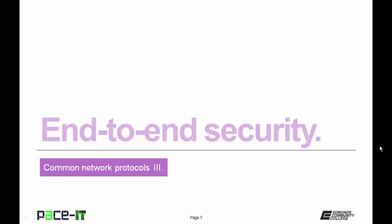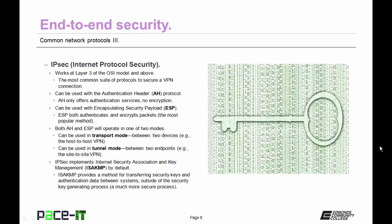Now let's briefly discuss end-to-end security, and we're going to do that by talking about IPSec, or Internet Protocol Security. It works at layer 3 and above of the OSI reference model. It's the most common suite of protocols used to secure a VPN connection. IPSec can be used with the Authentication Header or AH protocol. AH only offers authentication services but not encryption.